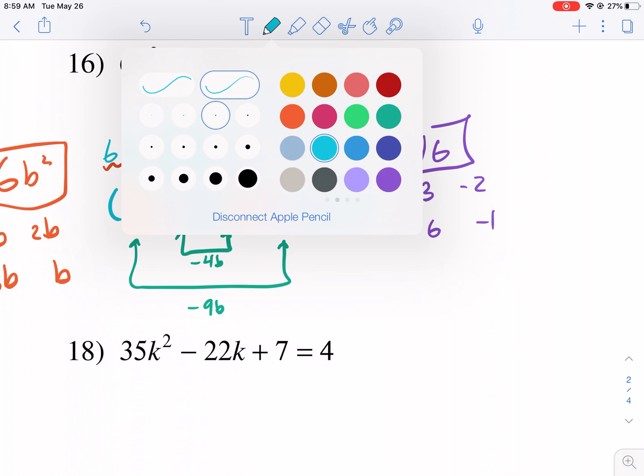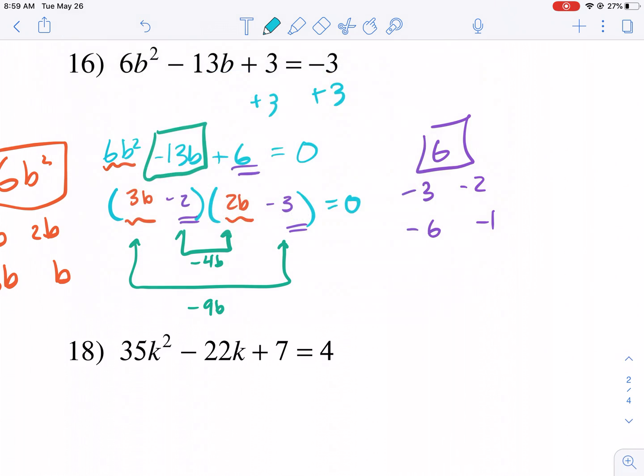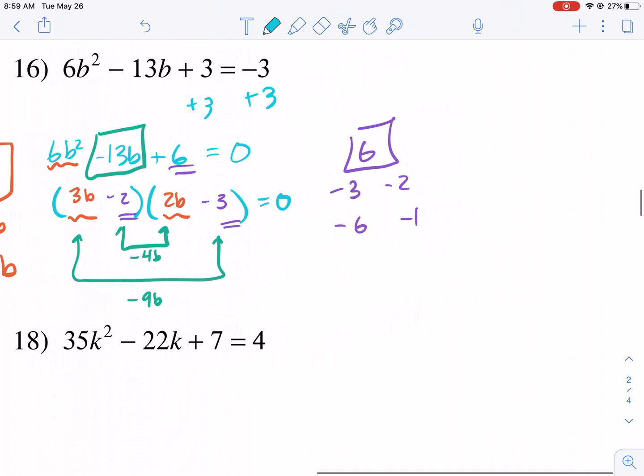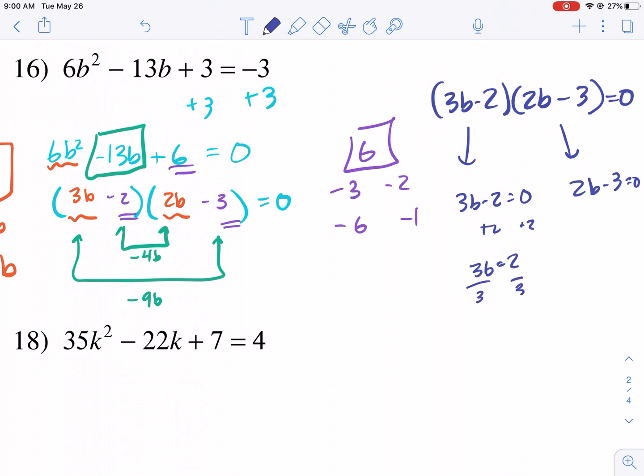This is one of the toughest things. This is where I lose a lot of students, but I'm telling you, it's like a puzzle. It's like cracking a combination lock. It just requires some practice. So now we have our final factored form of 3b minus 2 and 2b minus 3, and that's equal to 0. So we need to set both of these equal to 0. 3b minus 2 equals 0, and 2b minus 3 equals 0. Add 2, 3b equals 2, divided by 3, b equals 2 over 3, or add 3, we get 2b equals 3, divided by 2, b equals 3 over 2. So there's our two answers there.